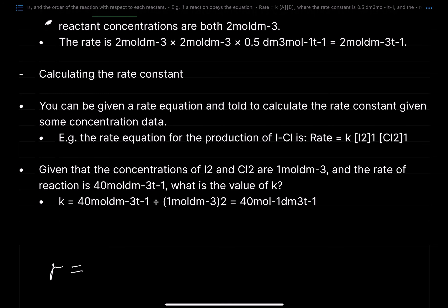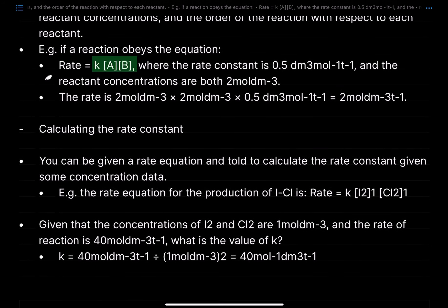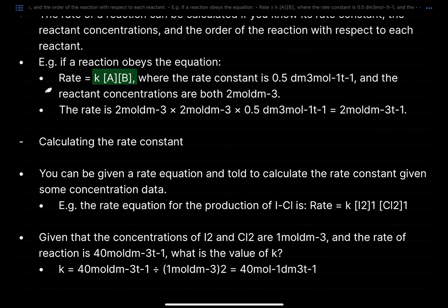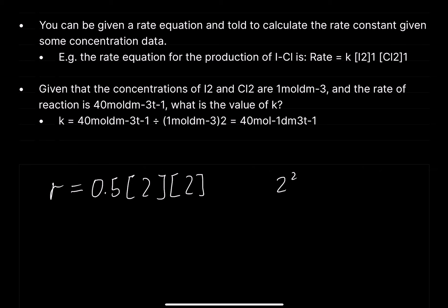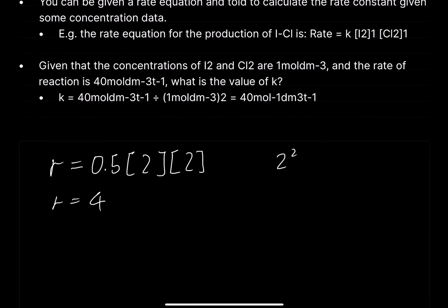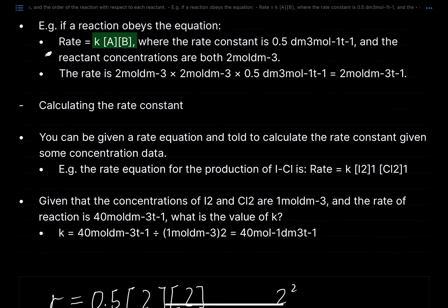So: r = k × [A] × [B] = 0.5 × 2 × 2 = 0.5 × 4 = 2. The rate of reaction is 2 moles per dm³ per second. Now looking at another example — working out k when given concentrations.